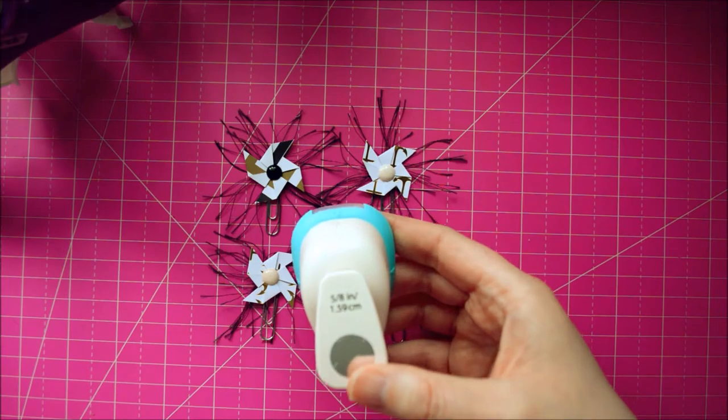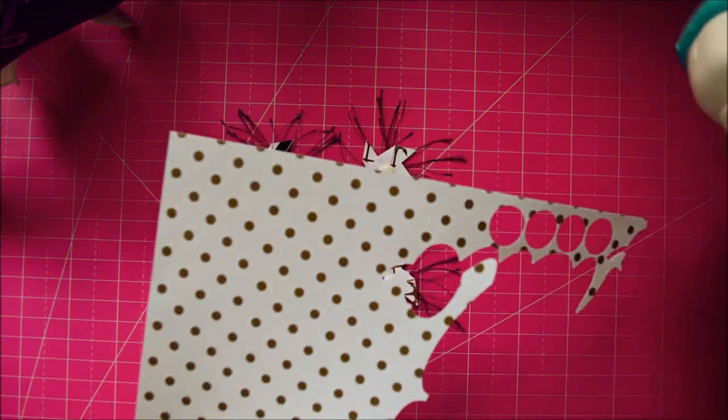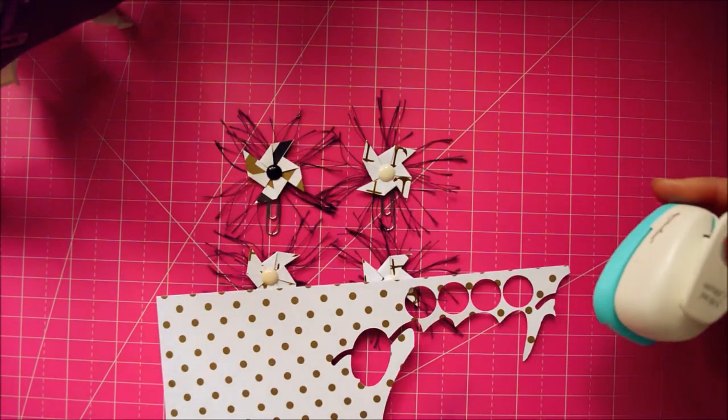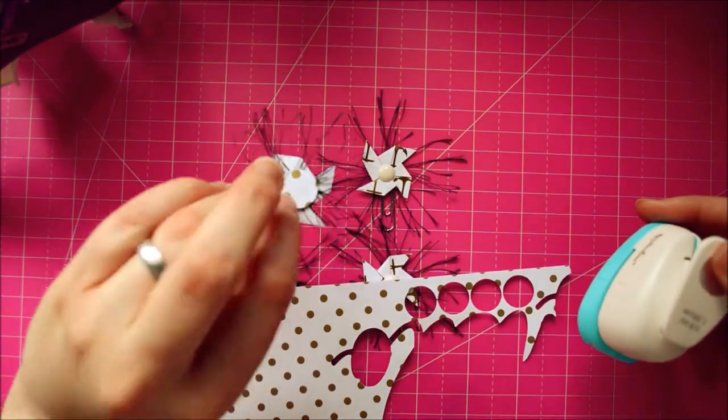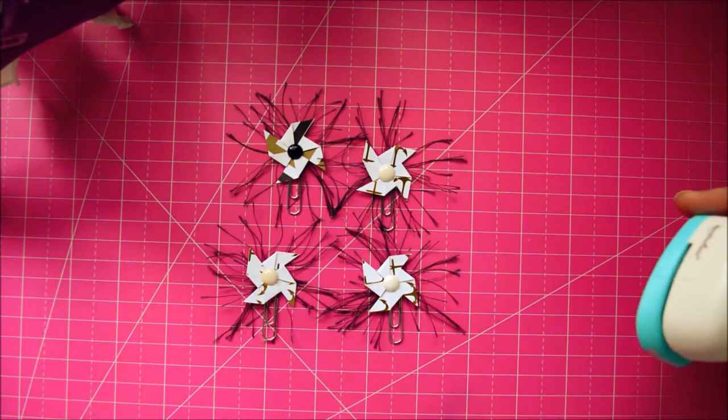A circle hole punch, and with that you'll need a scrap piece of paper. These are basically to punch out little coverings for the back so you don't see all the hot glue mess going on.